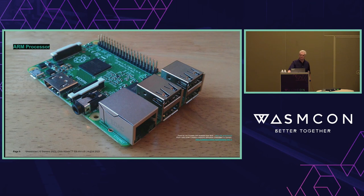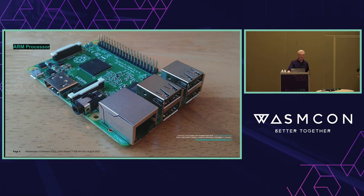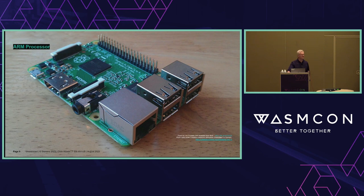Why did ARM succeed? It was low power, low footprint, and 32-bit. It brought to the embedded world capabilities previously only available in a desktop — programming structures from the 32-bit world could now be used in an embedded system with really low power draw. The way they sold their processors also allowed customization. We don't customize the WebAssembly instruction set, but we can customize how it talks to the rest of the world. WebAssembly is also really lightweight, and this combination points us toward WebAssembly's potential success in the embedded world.